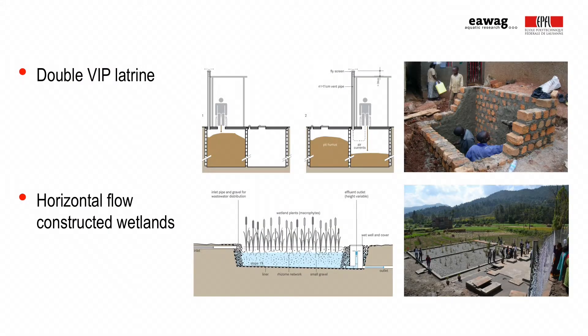We will also be looking into different technologies that are appropriate for urban areas, like the double VIP lined latrine or the horizontal flow constructed wetlands shown below. You don't need a master's in civil or environmental engineering, but some general background in environmental or civil engineering, urban planning, or geography would be helpful. Please do share your experiences in urban sanitation with us during the next five weeks. I look forward to working together with you on these issues.